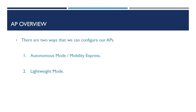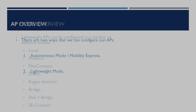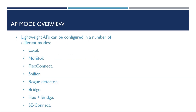Lightweight APs, on the other hand, are designed to connect to Cisco's wireless LAN controllers and operate in a number of different modes, depending on the required purpose. In this video, we're going to look at the modes available on a lightweight AP. These are: Local Mode, Monitor Mode, Flex Connect, Sniffer, Rogue Detector, Bridge, Flex and Bridge, and SE Connect.